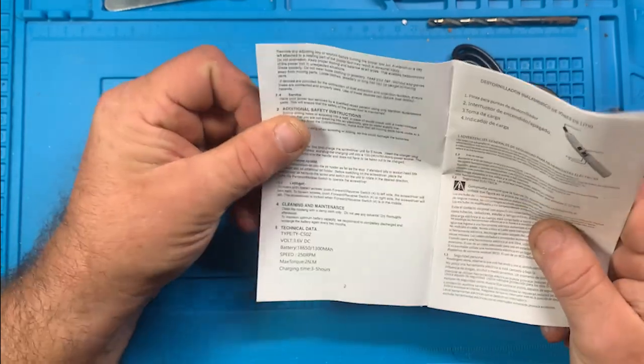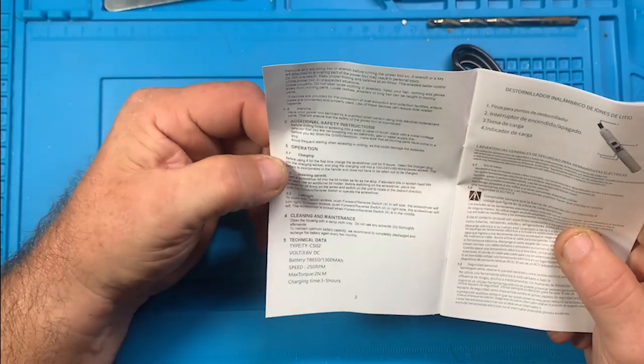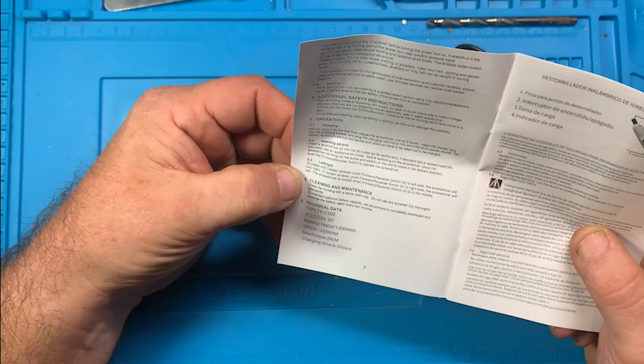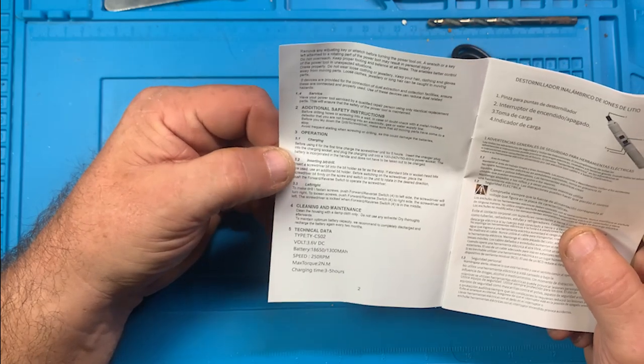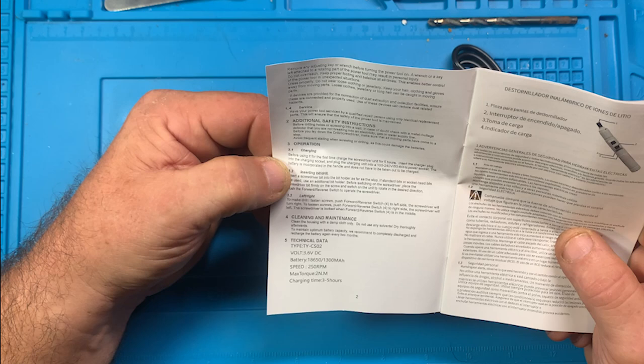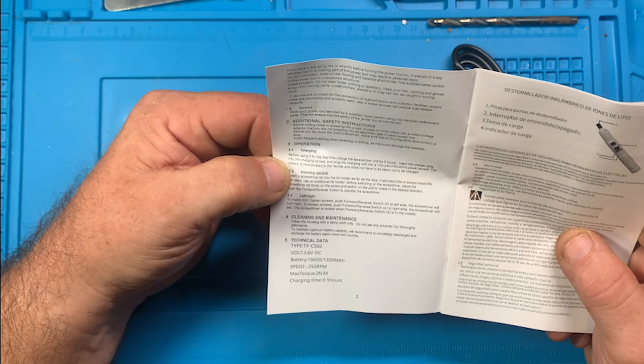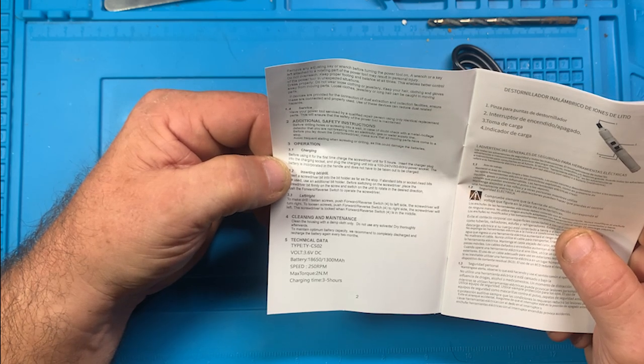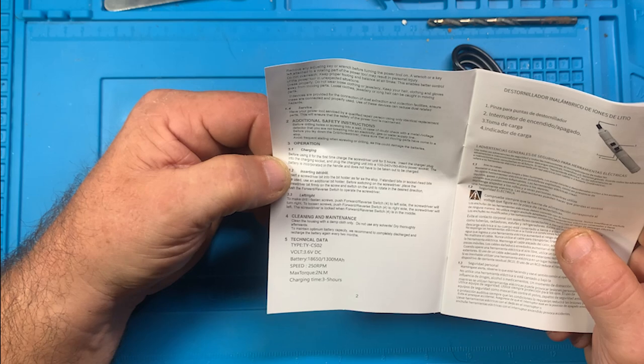Let's do English, here we go. Technical data, type, again, TY-CS02 is, I'm going to say the model number. Voltage is 3.6V DC, battery 18650, 1,300 milliamp-hours.